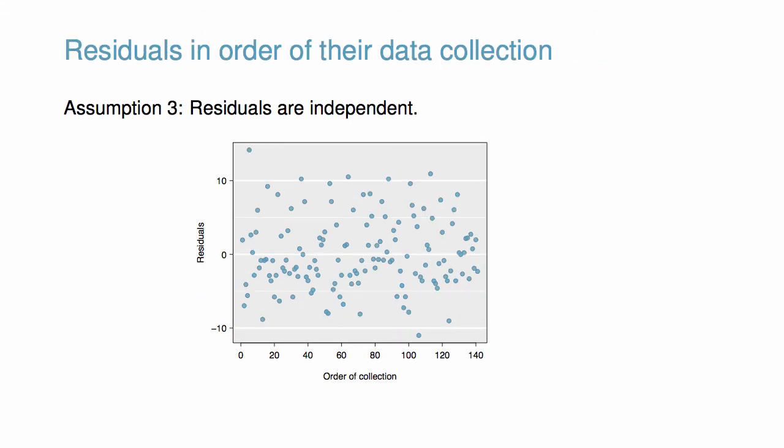To investigate whether residuals are independent, we created a plot of residuals in the order their corresponding auctions were observed. This plot is helpful in identifying any patterns between cases that are close to one another in time. Since consecutive points don't appear to be related in this figure, we see no structure that would indicate a problem.